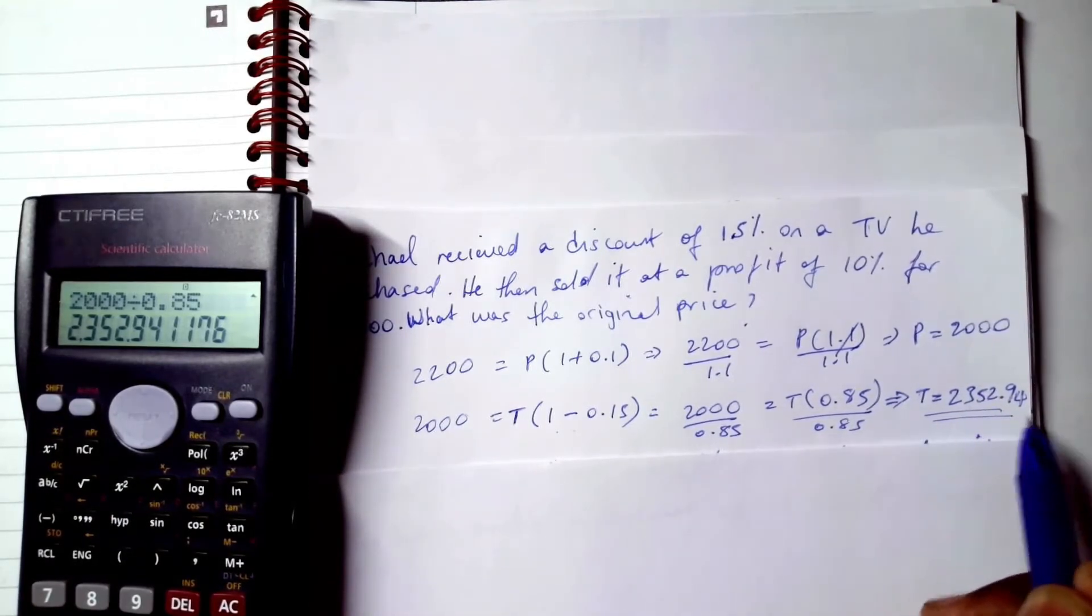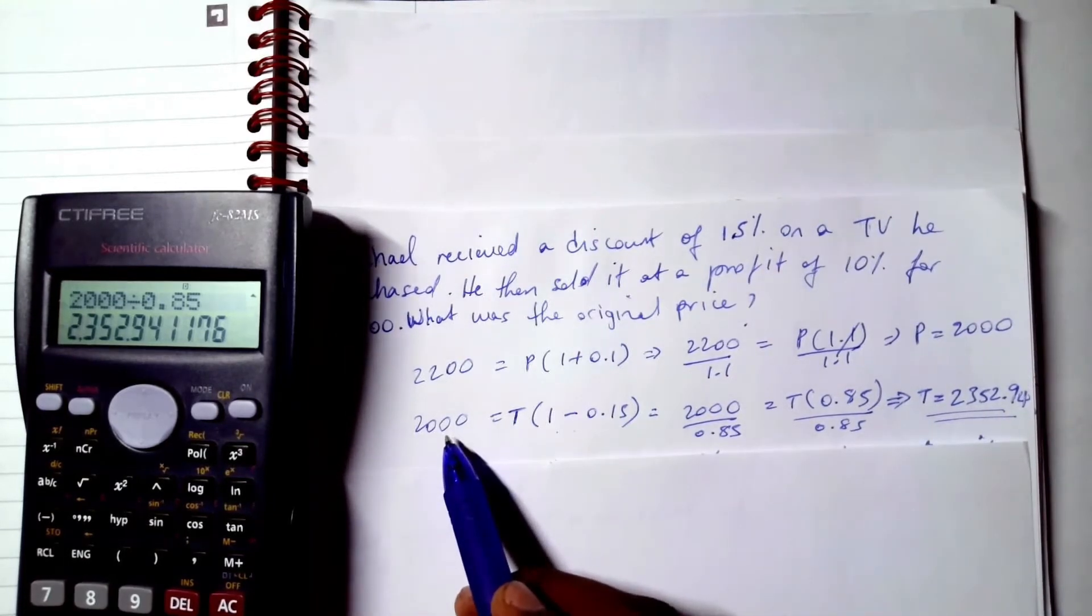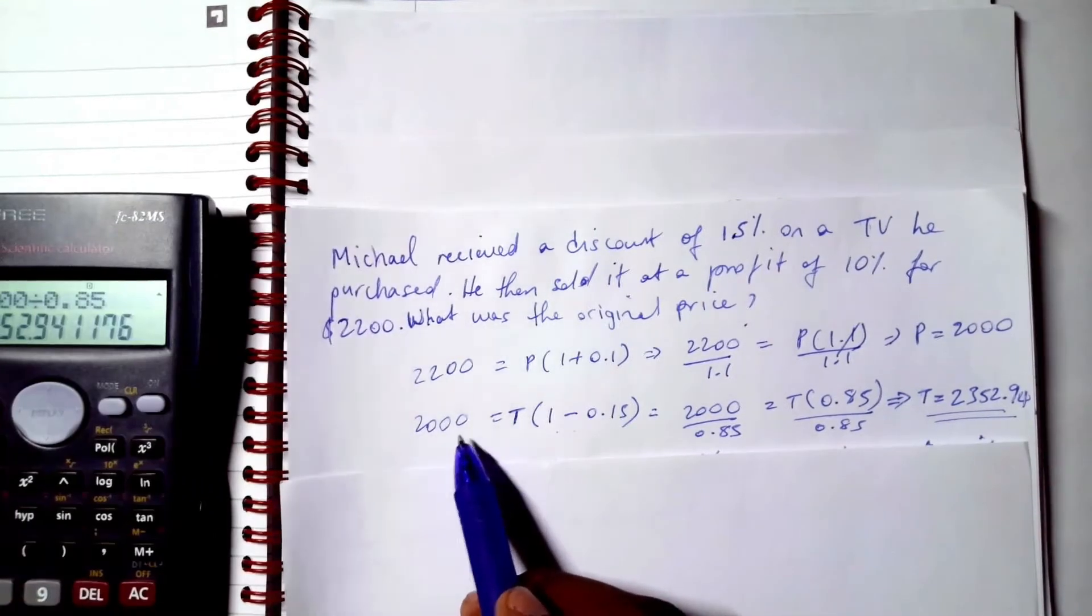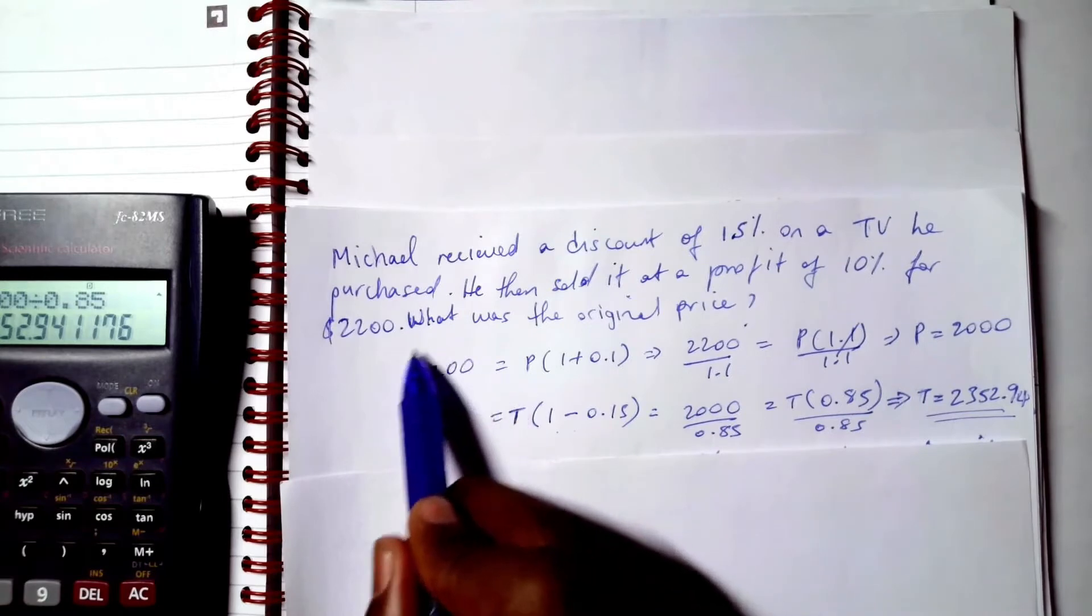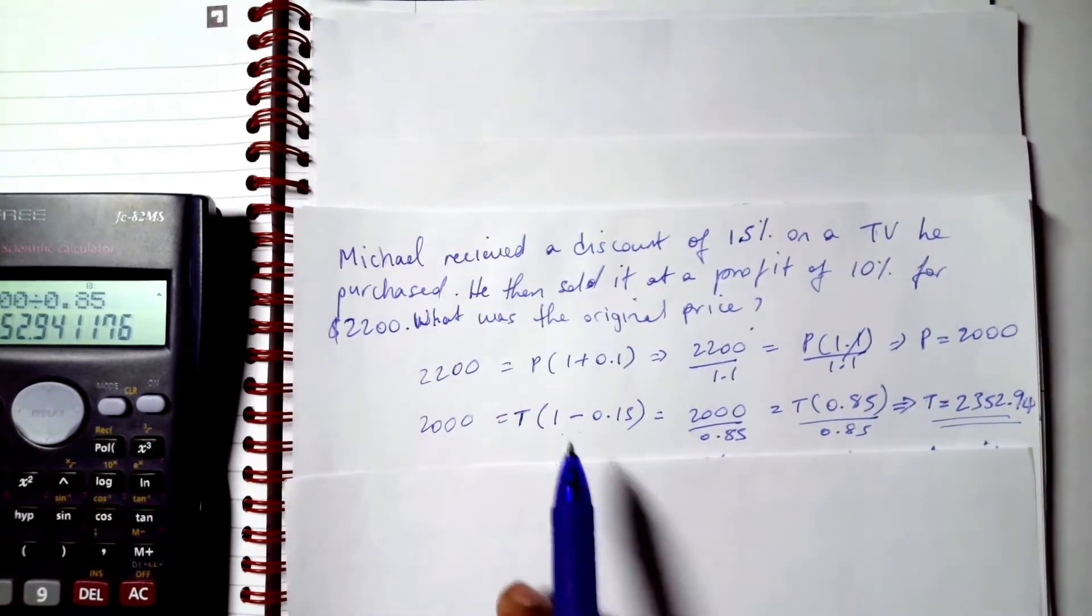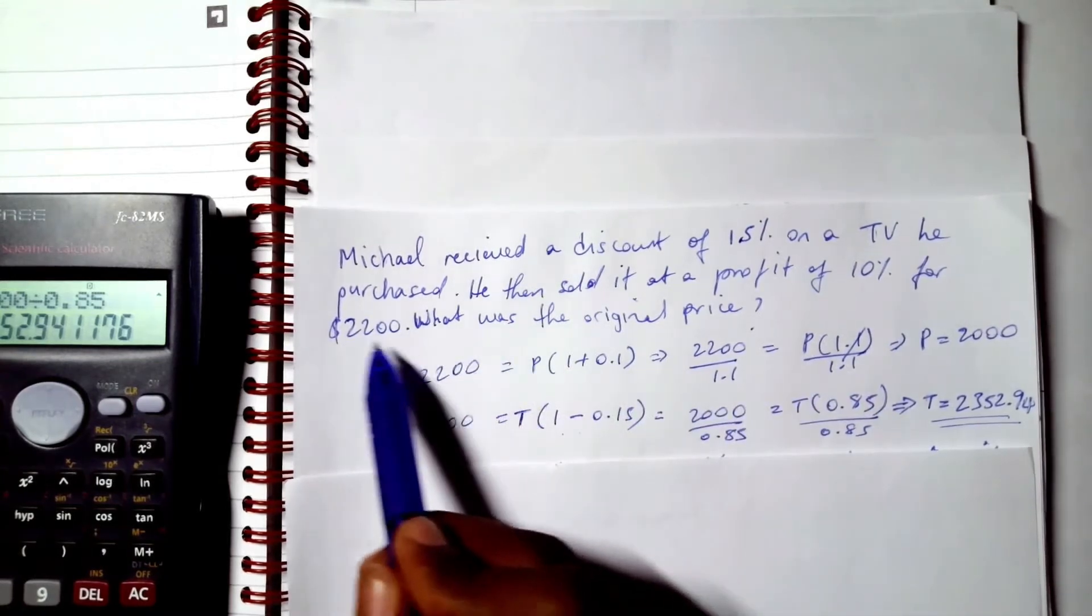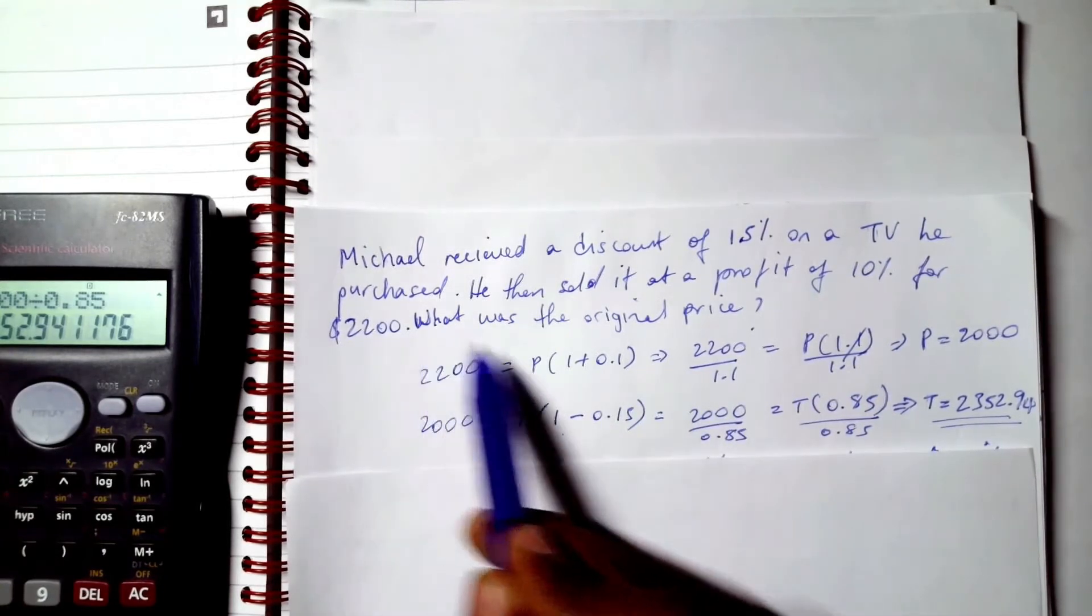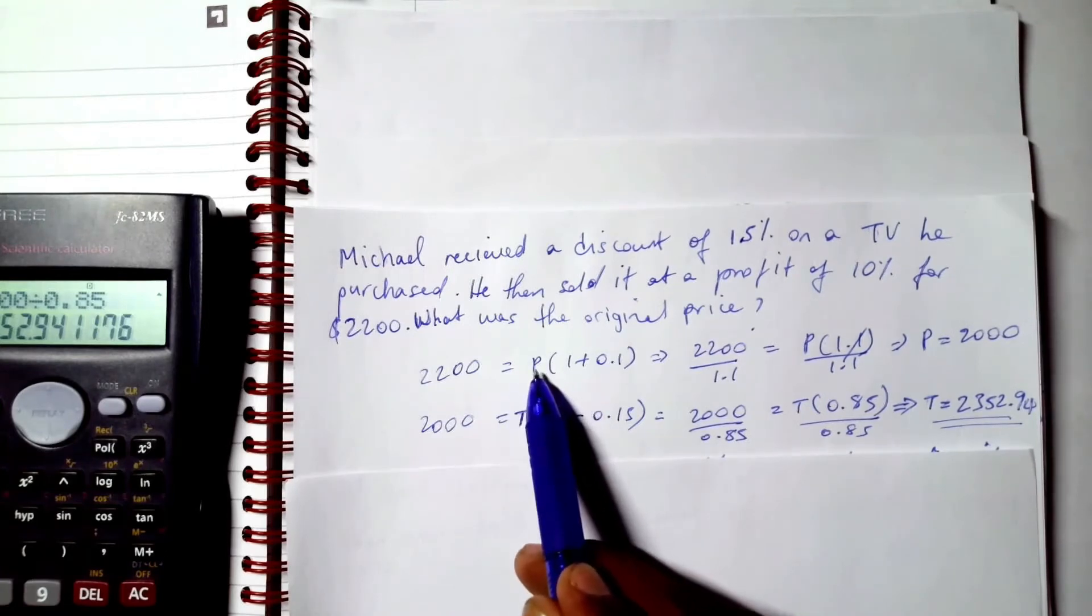A 15% discount was applied to this which brought it to $2000, and then a 10% profit was applied to the $2000 to bring it to $2200. This is how we do it - we work backwards.